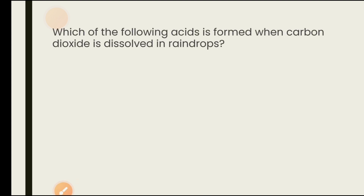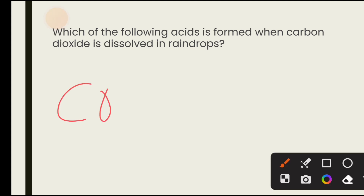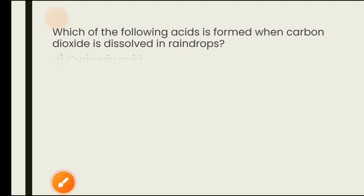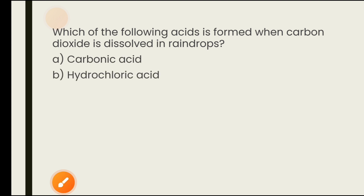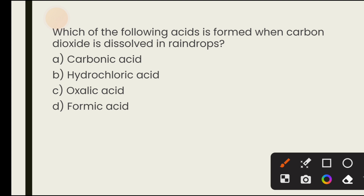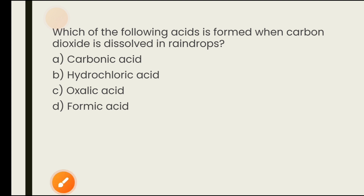Which acid is formed when carbon dioxide is dissolved in a rain drop? When CO₂ reacts with rainwater, it forms carbonic acid — H₂CO₃. Options are carbonic acid, hydrochloric acid, oxalic acid, formic acid. The answer is option A — carbonic acid.